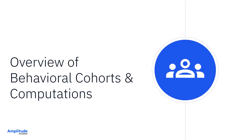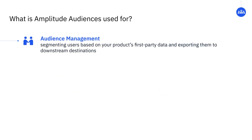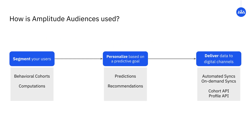One of the core purposes of Amplitude Recommend is audience management — the process of creating and activating different audience segments, so that you're targeting the right user with the most relevant message at the most appropriate time. The first step in doing this is to segment your users based on key behaviors or attributes.